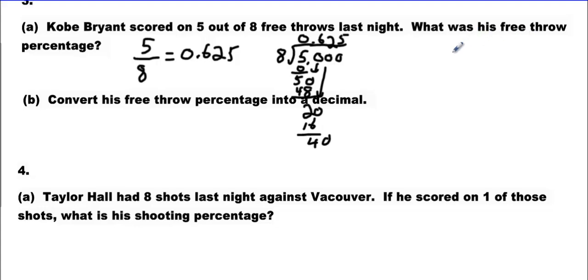What was his free throw percentage? Well, this is the percentage, right? No. This is the decimal. We have to convert that decimal to a percentage. And we're going to get 62.5%. Now convert it into a decimal. Well, we kind of did it already. It's 0.625.